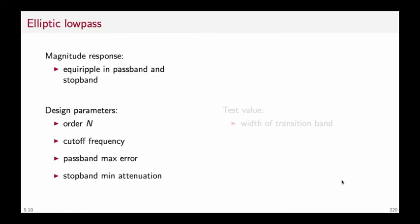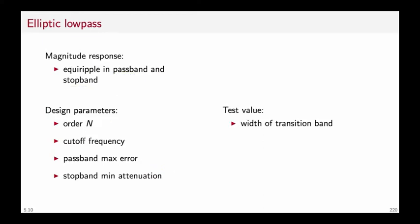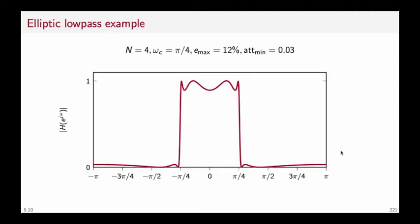The elliptic low-pass filter is equi-ripple both in the pass-band and in the stop-band. The design parameters are the order, the cut-off frequency, the pass-band maximum error, and the stop-band minimum attenuation. We run the algorithm and check the result in terms of the width of the transition band. This design lets you control all parameters of the filter except the transition band, making it the most complex of the three. For order 4, cut-off frequency pi over 4, a maximum pass-band error of 12% and a minimum stop-band attenuation of 0.03, the elliptic filter gives the steepest transition band for a given order of all the filters seen so far.